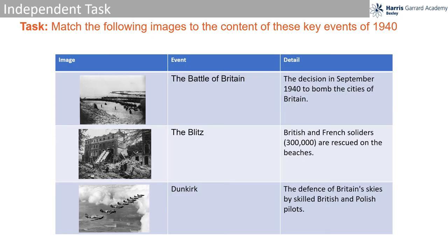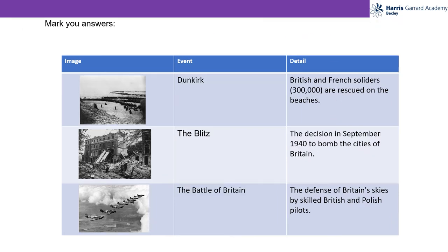Here's a short task for you to do. As you can see, there are three columns. I want you to sort out the images to correspond with the event and to ensure that the detail matches up too. At the moment they're all mixed up, so you need to ensure that the image matches the event and then matches the detail. Pause the lesson and have a go. How did you get on? Here's the correct table with the answers in order.